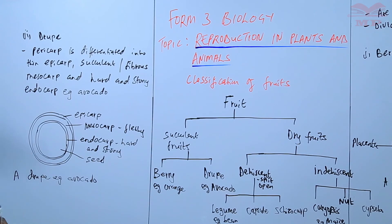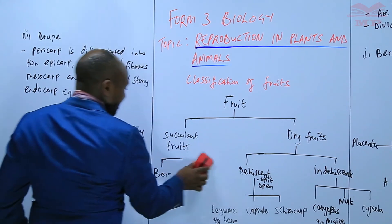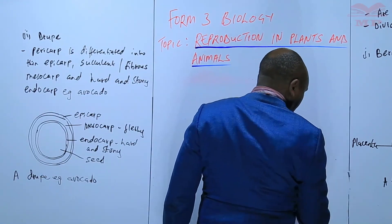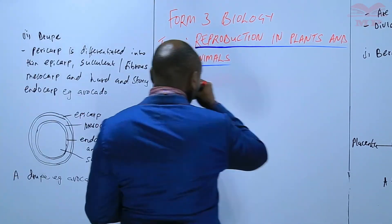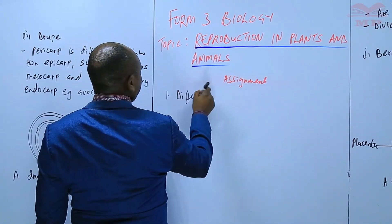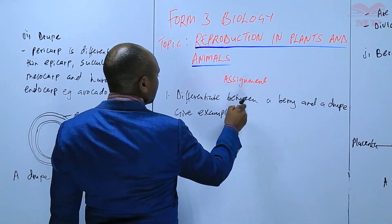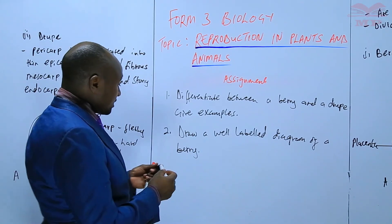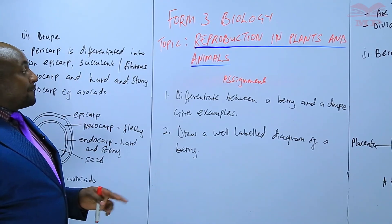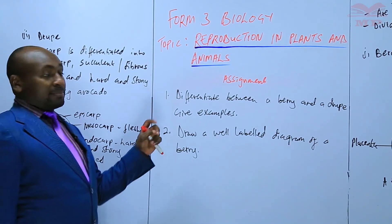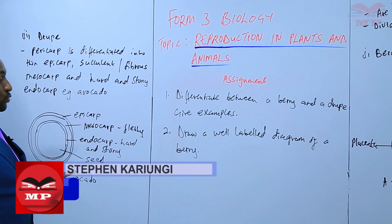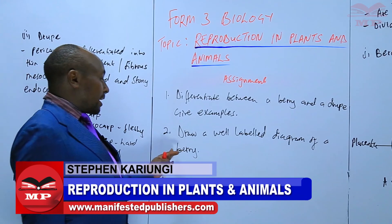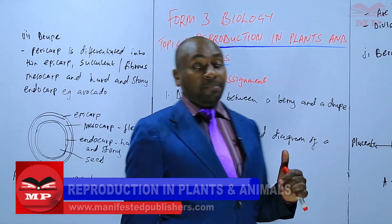We are going to have an exercise on the same. The first question in the assignment: differentiate between a berry and a drupe, and give examples. Number two: draw a well-labeled diagram of a berry. So we are going to stop there until next time.